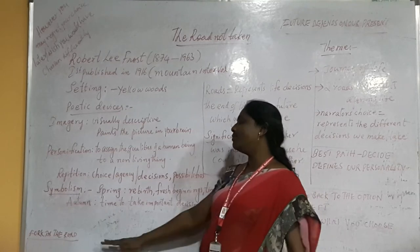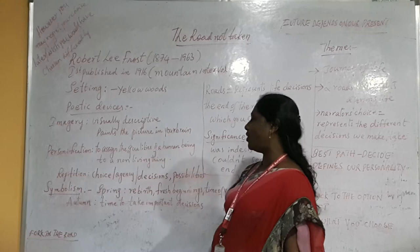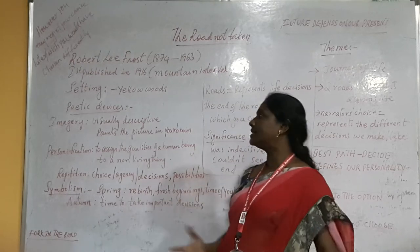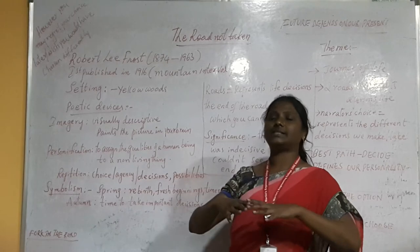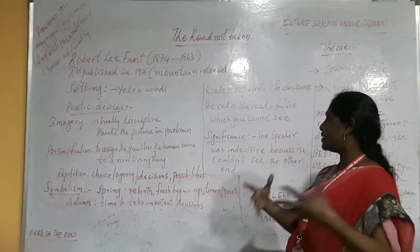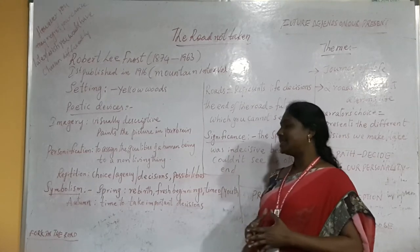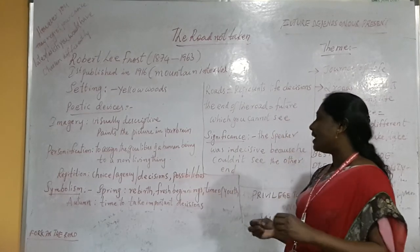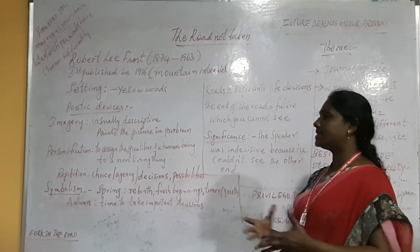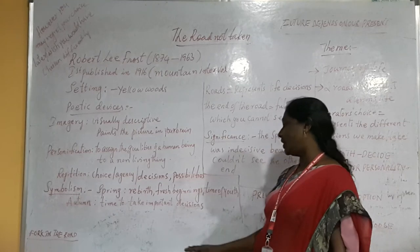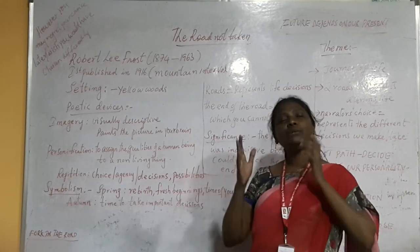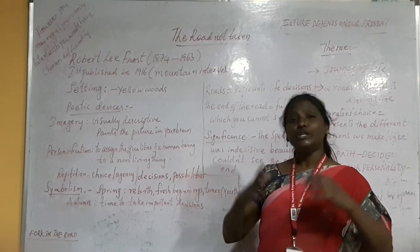The next important device is symbolism. As I said, the yellow woods and many other symbols are used in the poem. The spring with which he starts the poem is all about rebirth — new life or new beginnings. Spring also symbolizes the time of youth. The autumn season is also described, which represents the time to take important decisions. The symbols speak about youth — and that is the most important phase in our life to take decisions.